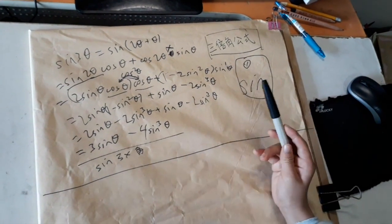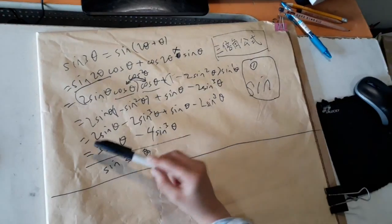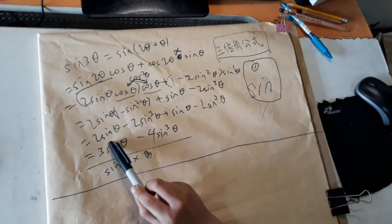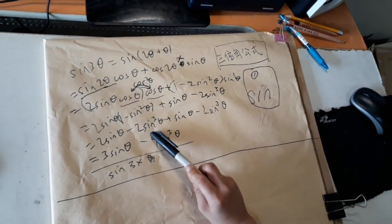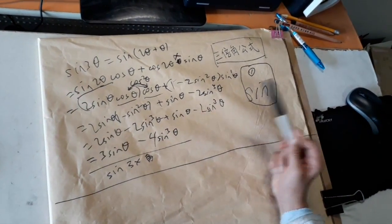So now we need to combine like terms. For example, right here, 2 sine theta plus sine theta is 3 sine theta. And 2 sine cubed theta minus 2 sine cubed theta... wait, 2 sine cubed plus 2 sine cubed is 4 sine cubed.